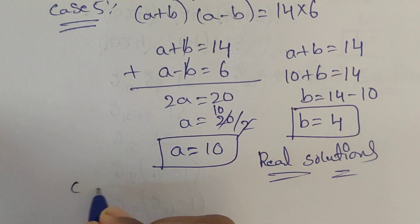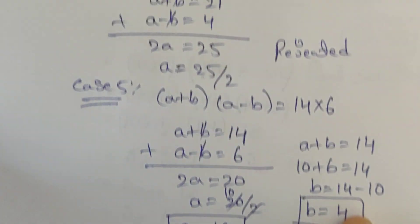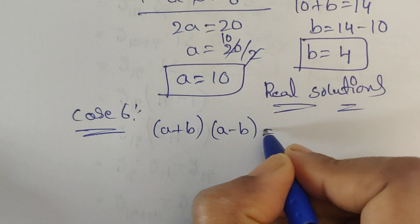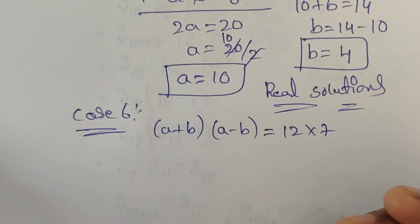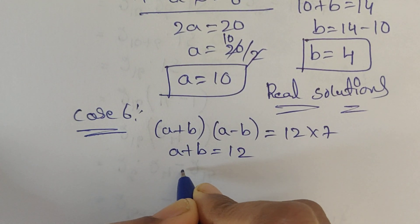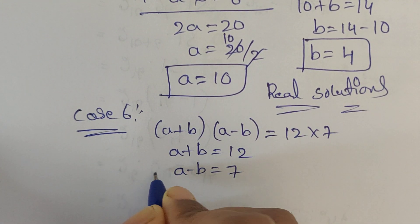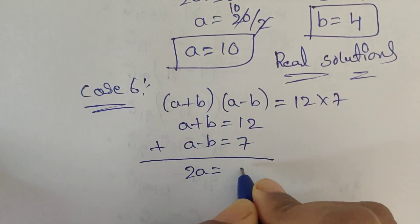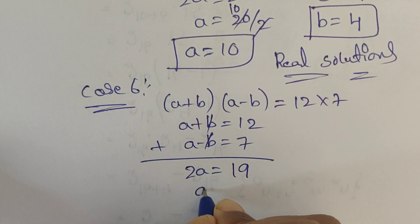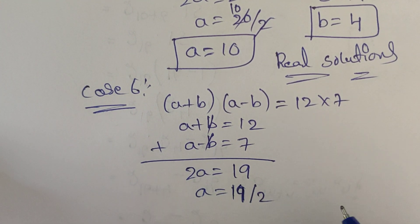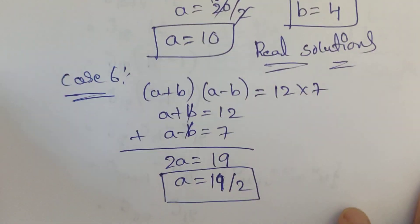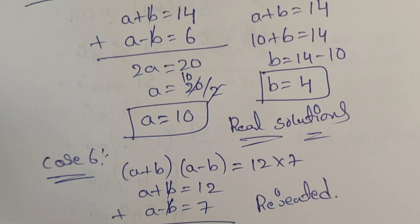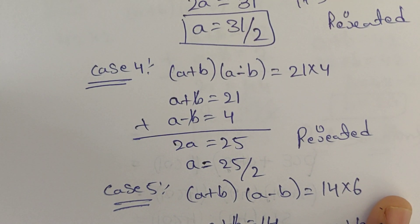Case 6: a plus b equals 12 and a minus b equals 7. Adding these two equations, b cancels, giving 2a equals 12 plus 7 which equals 19. So a equals 19 divided by 2, which is a fraction — so this case is also rejected.